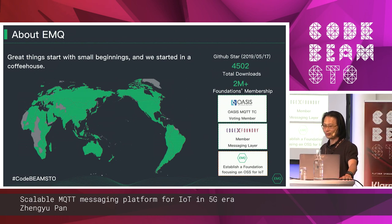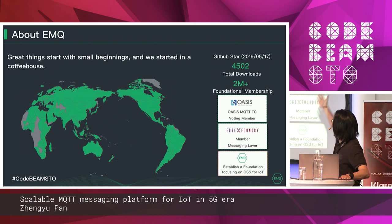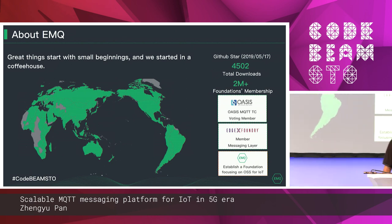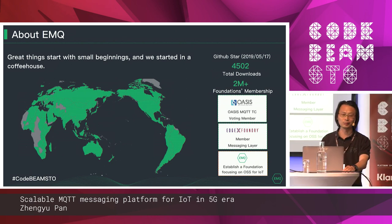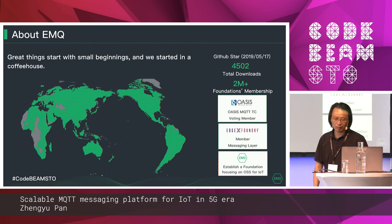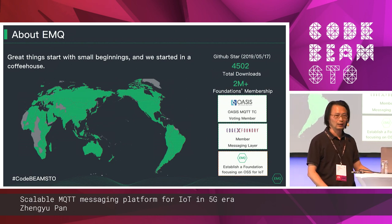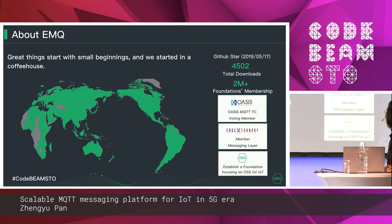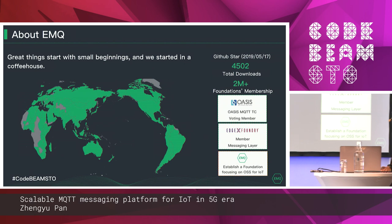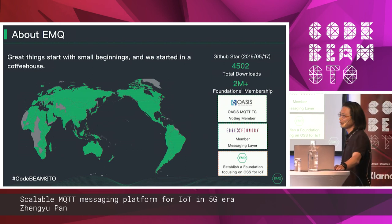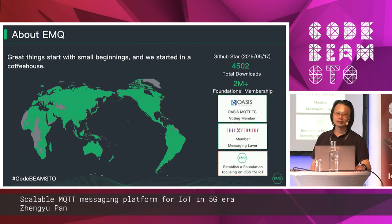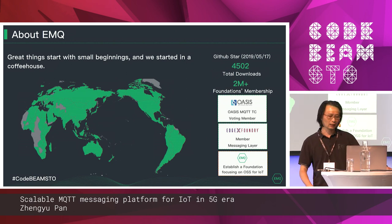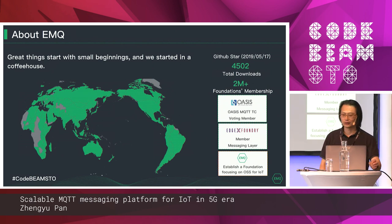He was encouraged and started taking things seriously. He called up some colleagues from his old companies and started a new company dedicated to EMQ. Today, we have 4,500 stars on GitHub and more than two million downloads. We are members of different foundations like Oasis, which is in charge of the MQTT standard, and we are also a member of CNCF and Cloud Foundry.